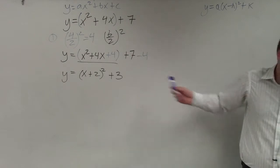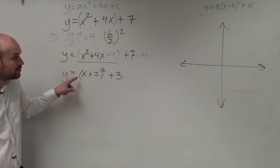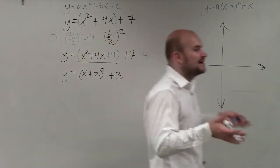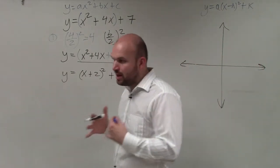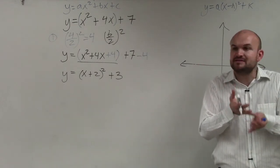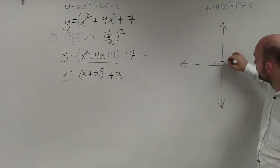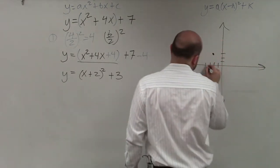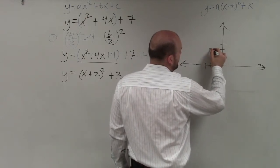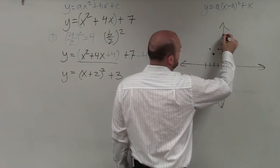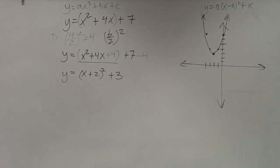Now let's graph this. When graphing vertex form, our A is equal to 1, so the shape of the parabola is going to be exactly the same as the parent parabola. All I need to do is apply my transformations. That plus 2 tells me to go left 2, and then up 3. Since it has the same shape as the parent parabola, I can go over 1 up 1, over 1 up 1, over 2 up 4, over 2 up 4. And there you go.